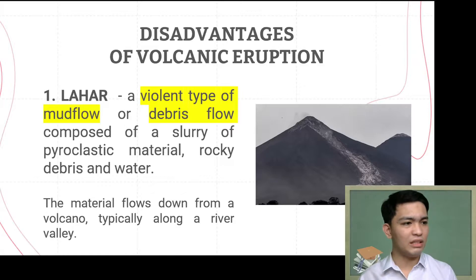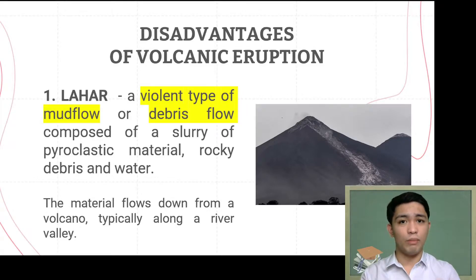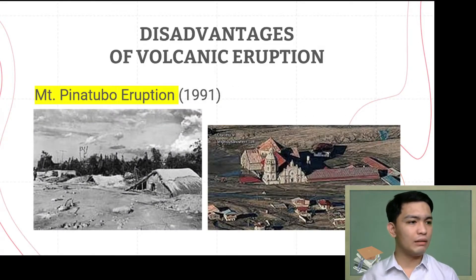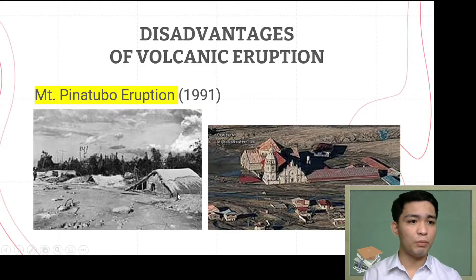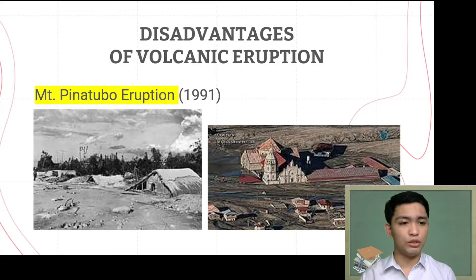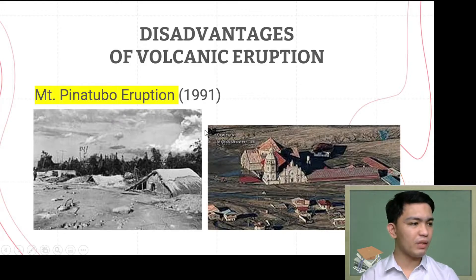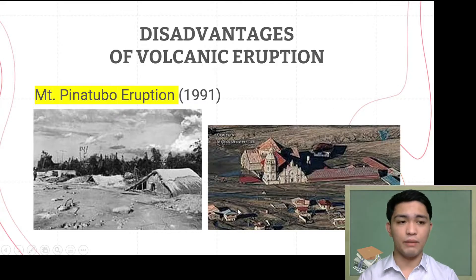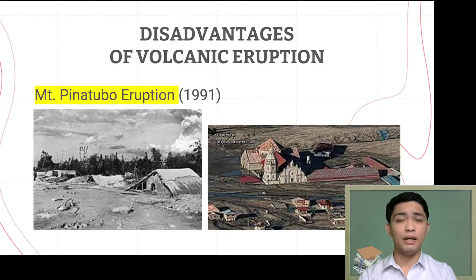Another event that may trigger this type of violent mud flow is rainfall. After an eruption, heavy rain can carry materials down to surrounding regions near the volcano. That is exactly what happened during the Mount Pinatubo eruption in 1991. The eruption deposited volcanic ash and rock fragments on the volcano slope. Within hours, heavy rains washed this material down into surrounding lowlands in giant, fast-moving lahars, burying structures and destroying areas around Mount Pinatubo.